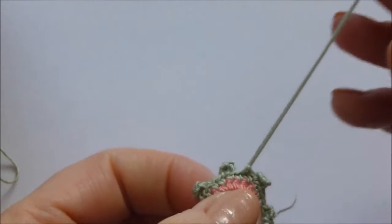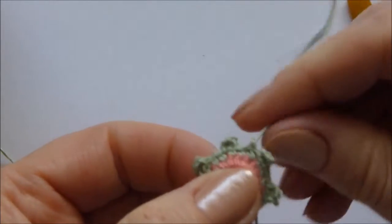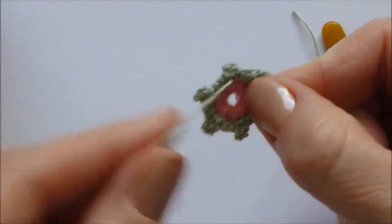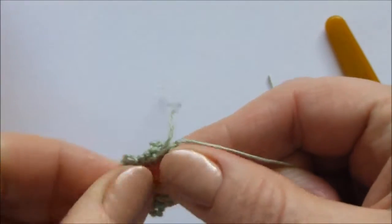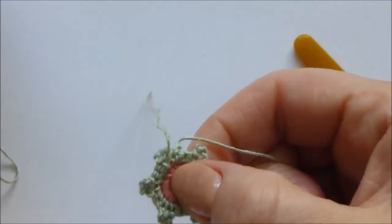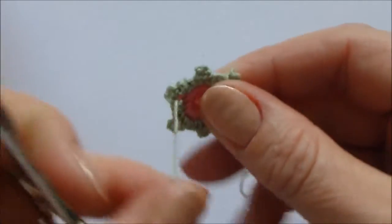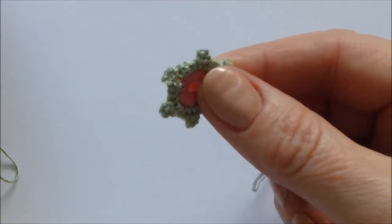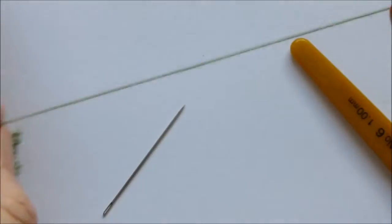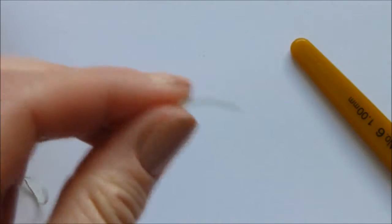Cut the thread. The thread you were crocheting around can be cut off because you already crocheted over it and this thread is woven in. You only have to deal with this end here.